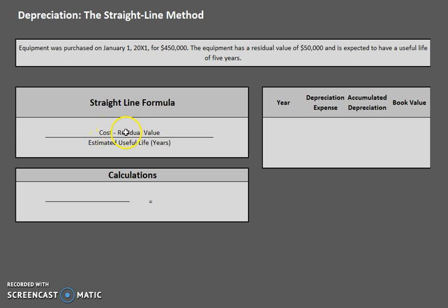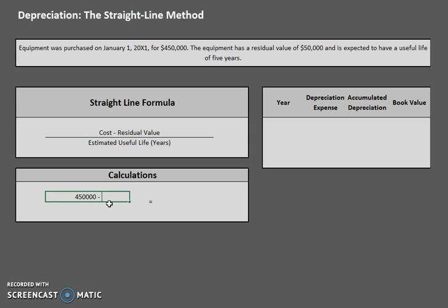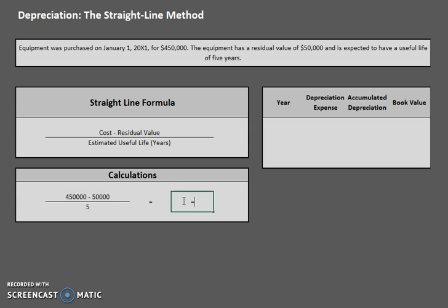Here's the formula — definitely commit this to memory: cost minus residual value, divided by estimated useful life in years. So we have our cost, our residual value, and our estimated useful life. Plugging in the numbers: $450,000 minus residual value of $50,000, divided by estimated useful life of five years, gives us a total annual depreciation expense of $80,000.